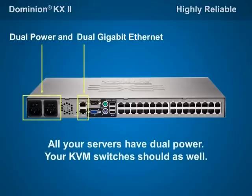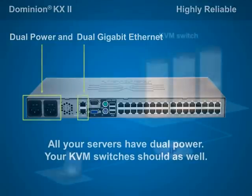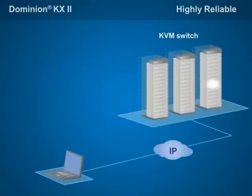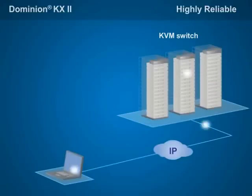All of your production servers feature dual power supplies and dual Ethernet — obviously, so should your KVM switches. Administrators rely upon KVM over IP switches to fix server problems remotely, because when every other interface fails, KVM consoles still function.